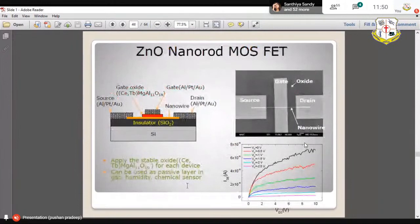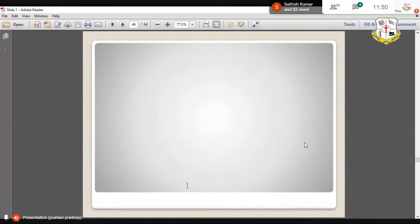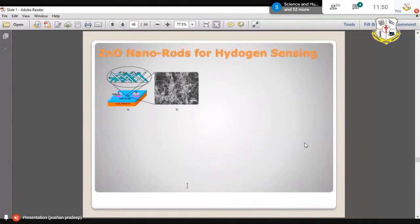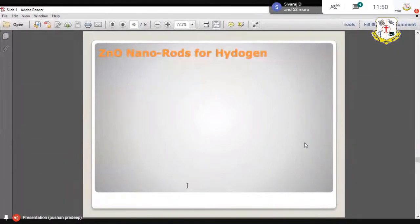Here I have shown the zinc oxide tetra ports and even zinc oxide nanorods are used for making a MOSFET. The highlight of my lecture here is the zinc oxide nanorods for hydrogen sensing, used as sensor devices.